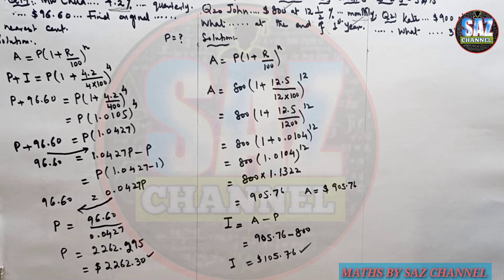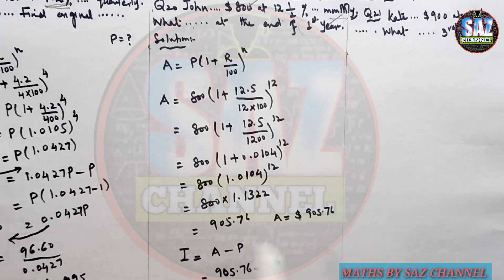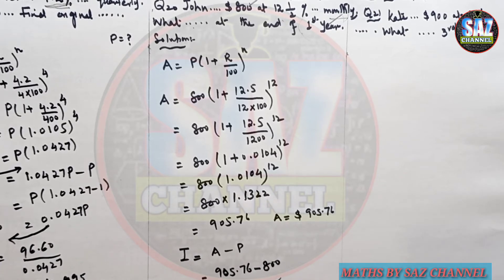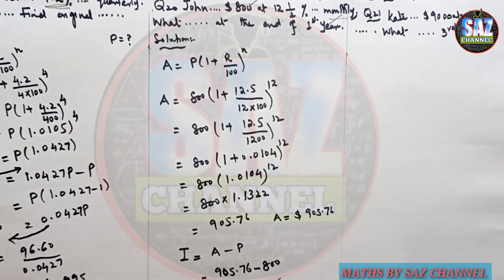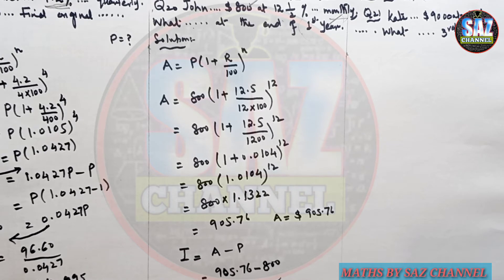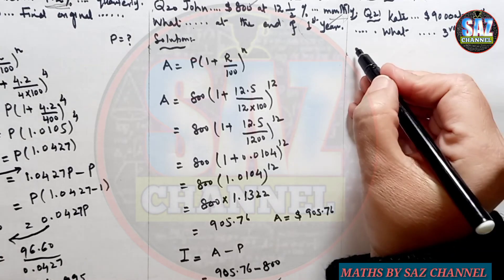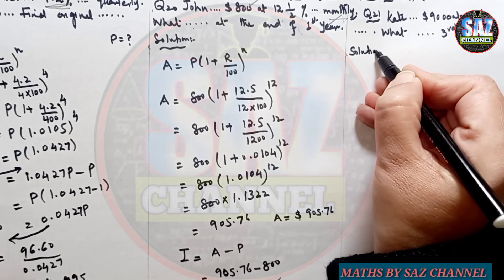Question 21 says: Kate invests $9,000 at 2% per annum compound interest compounded daily. What is the amount at the end of the third day? This is a straightforward question, so let's move quickly to the solution.